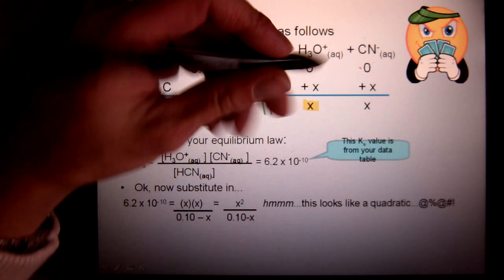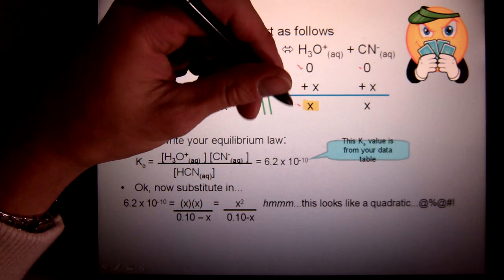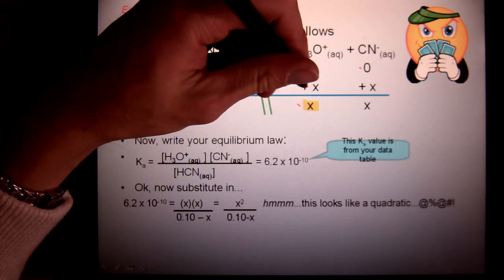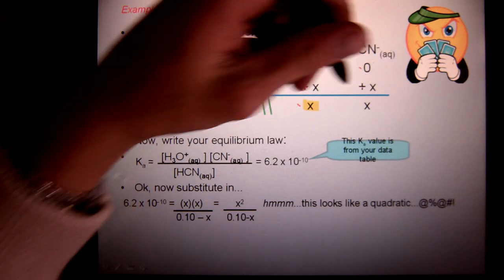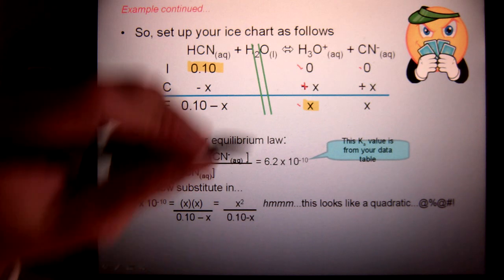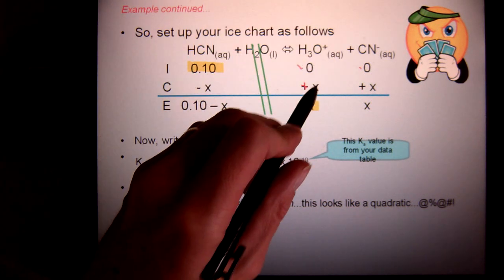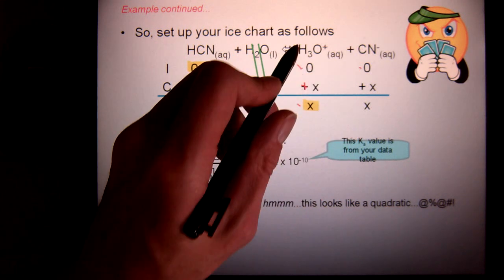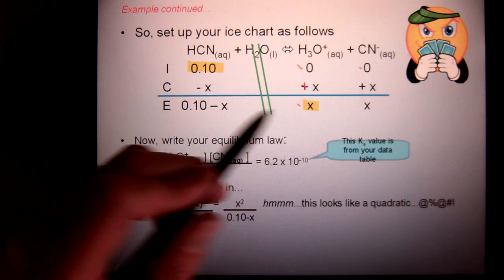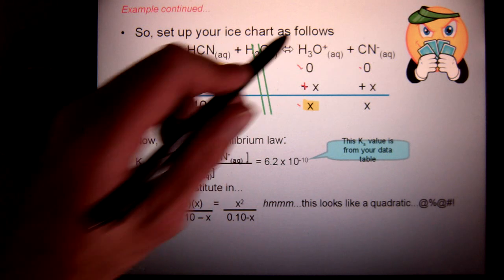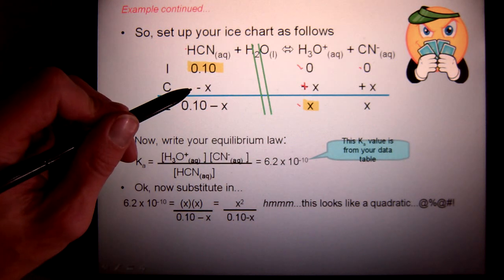Well, if I started at 0, I ended at x, that must mean I changed by positive x. And then, just like before, use the ratio to solve for the other change values. Here, the ratio is going to be 1 to 1. That's why this is also a change in x. This ratio is also 1 to 1. So, it's also a change in x.